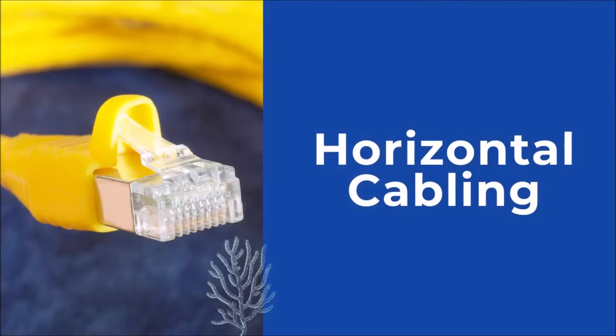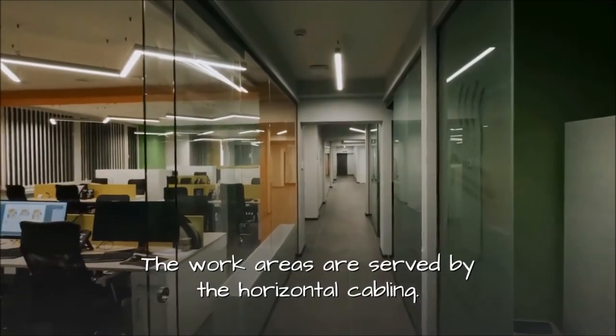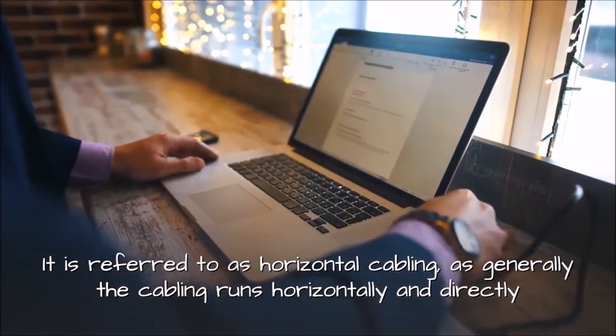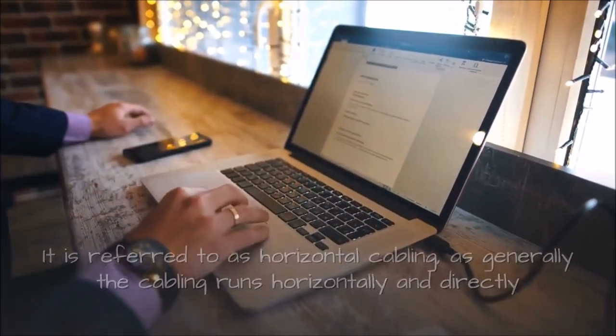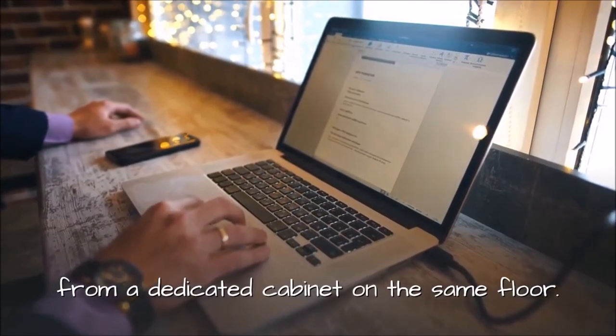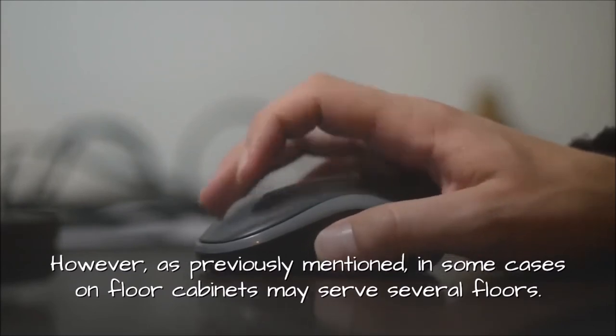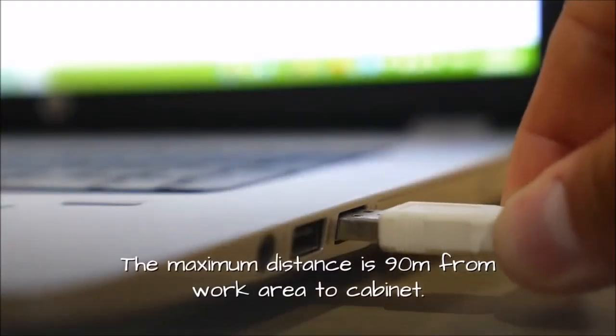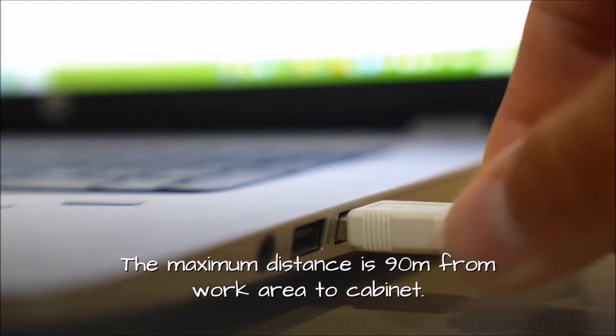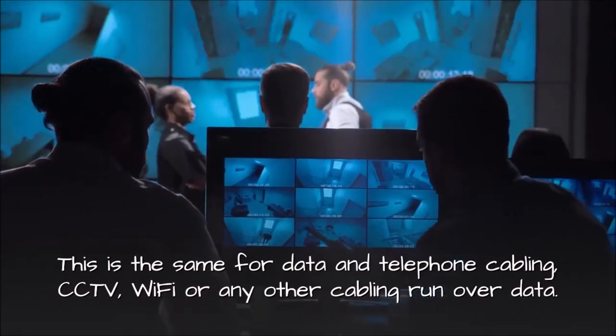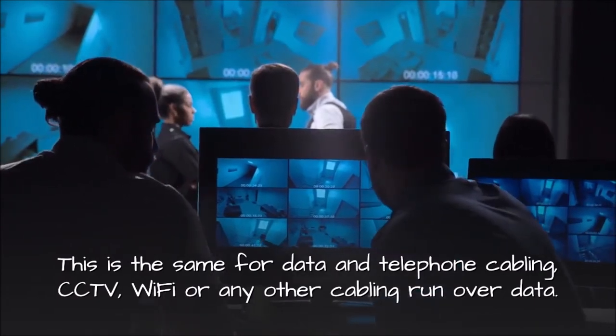Horizontal cabling. The work areas are served by the horizontal cabling. It is referred to as horizontal cabling, as generally the cabling runs horizontally and directly from a dedicated cabinet on the same floor. However, as previously mentioned, in some cases on floor cabinets may serve several floors. The maximum distance is 90 meters from work area to cabinet. This is the same for data and telephone cabling, CCTV, Wi-Fi or any other cabling run over data.